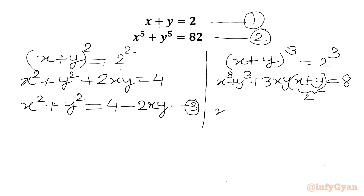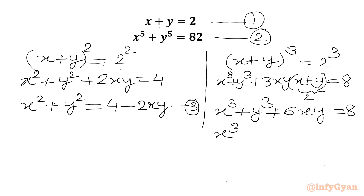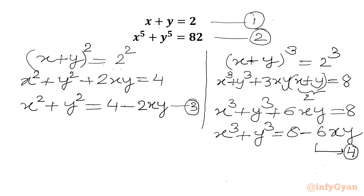So I can write x cubed plus y cubed plus 3 times 2 times xy equals 8, which gives x cubed plus y cubed equal to 8 minus 6xy. Let's say this is equation number 4. Now we will multiply equation 3 and equation 4.